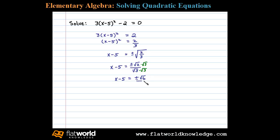Adding 5 to both sides, we then have x = 5 ± √6/3. Now that doesn't look like the answer in the textbook.